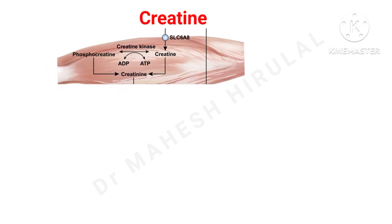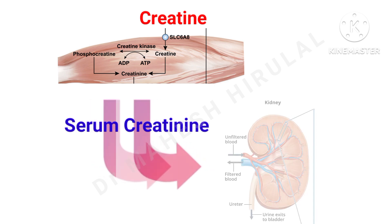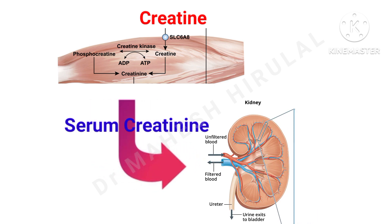Creatinine is a source of energy for muscles. Its metabolism generates creatinine as a by-product. Creatinine is produced at a steady rate and released into the blood, then transported to the kidneys. The kidneys filter creatinine via the glomeruli and excrete it in urine. Since creatinine is minimally reabsorbed and minimally secreted by the tubules, its blood level is a good indicator of glomerular filtration rate. Any damage to kidney function will lead to an increase in serum creatinine.